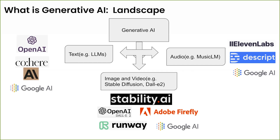A few of the companies I've listed here in the area of image and video: Stability, DALL-E 2, Firefly, RunwayML, and Google AI doing image and video solutions. In the field of audio, we have amazing companies like Eleven Labs, Descript, and of course Google AI.